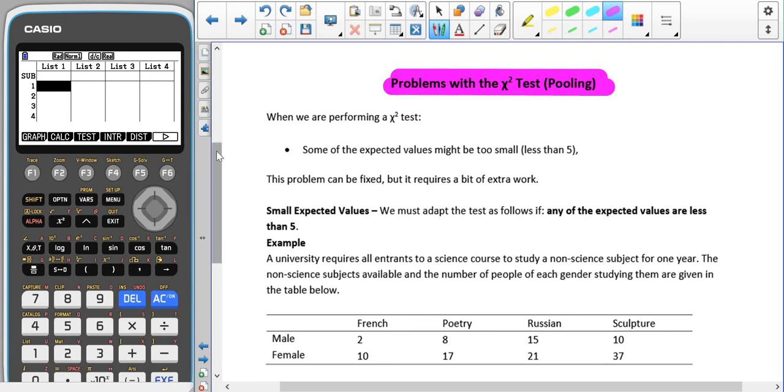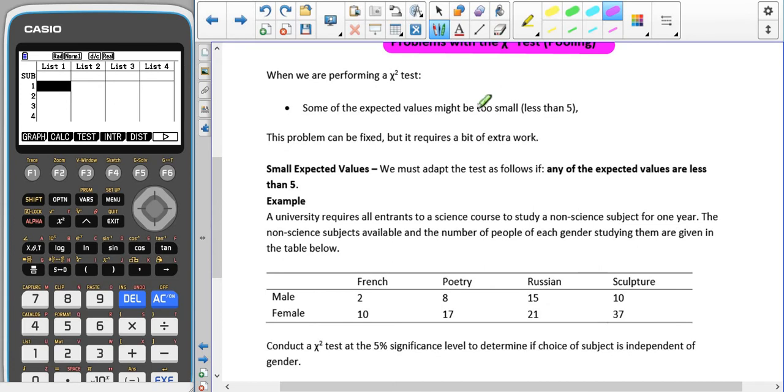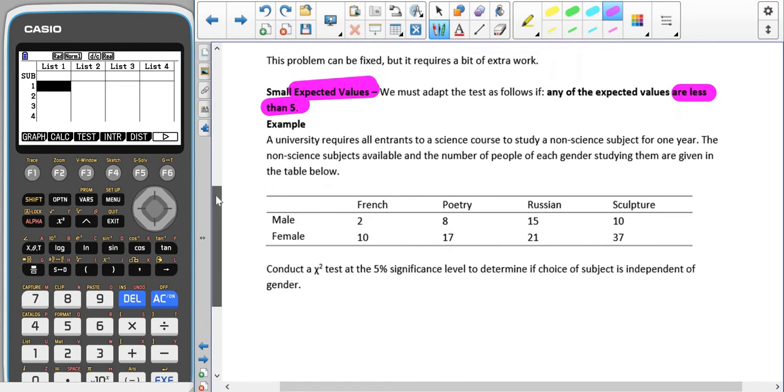When we perform the chi-squared test, some of our expected values might be too small, and we class too small as being anything that is strictly less than 5. This problem can be fixed, but it requires a bit of extra work. So with small expected values, we must adapt the test as follows if any expected values are less than 5. Make sure that you understand that it's the expected values that we are looking at, the ones that we get from our calculator.